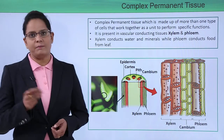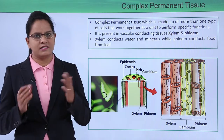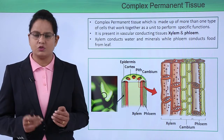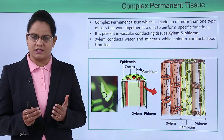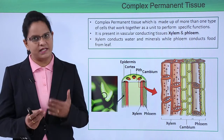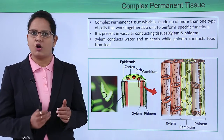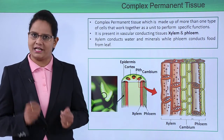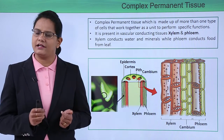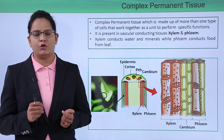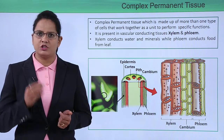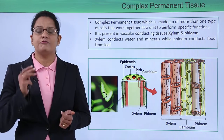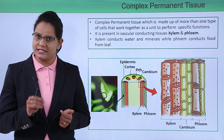Complex permanent tissue, as discussed in previous videos, are tissues made up of many types of cells. Simple tissues were made up of just a single type of cell like parenchyma, colenchyma, and sclerenchyma. Complex tissues are made up of many types of cells; they are mainly conducting tissues — xylem and phloem. The function of xylem is conducting water, and the function of phloem is to conduct food.